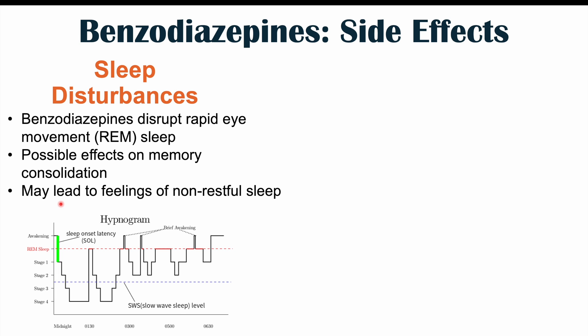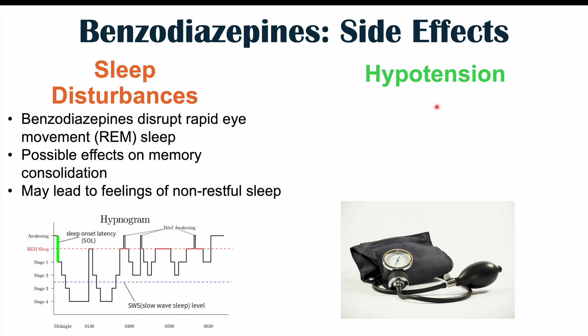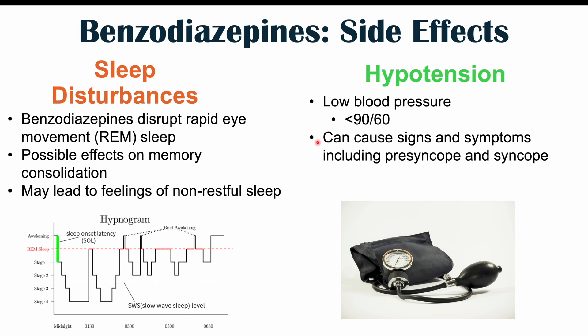Hypotension — low blood pressure below 90 systolic or 60 diastolic — can also occur with benzodiazepine use, leading to presyncope (dizziness) and syncope (fainting). This can result in orthostatic hypotension, where patients who sit up or stand up too quickly feel dizzy and may fall.